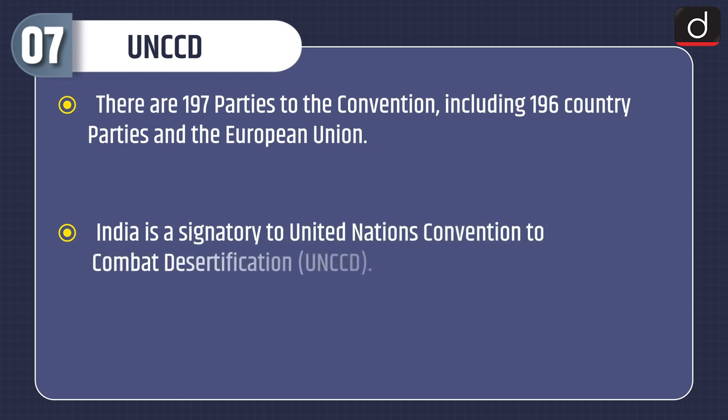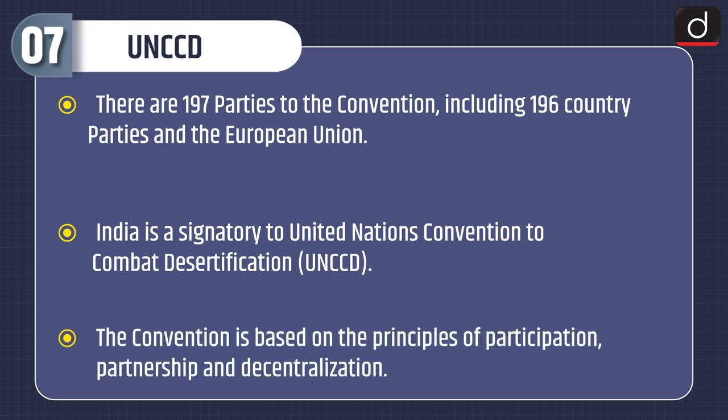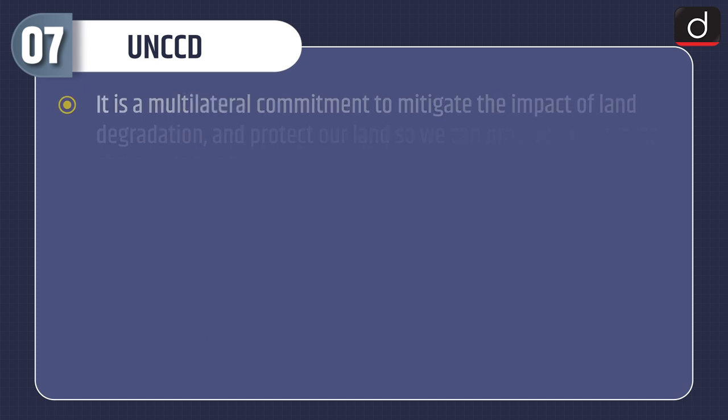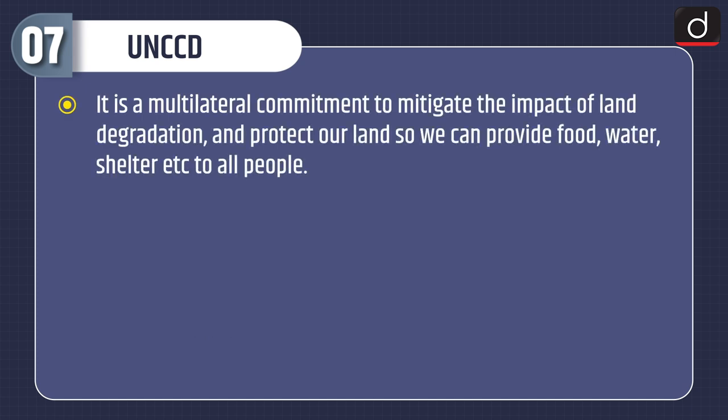India is a signatory to the United Nations Convention to Combat Desertification. The convention is based on the principles of participation, partnership and decentralization. It is a multilateral commitment to mitigate the impact of land degradation and protect our land, so that we can provide food, water, shelter, etc. to all people.